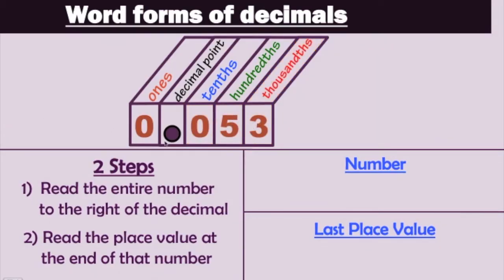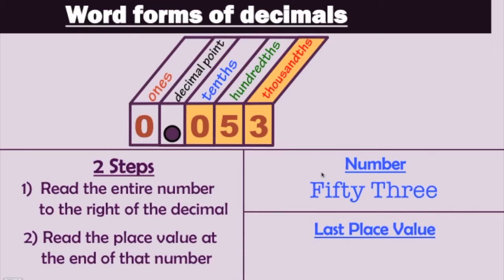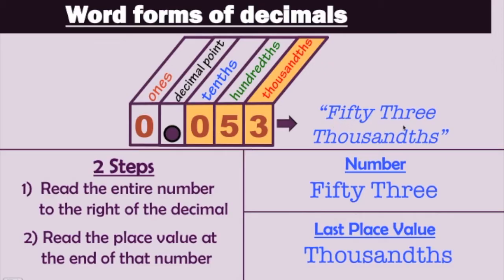How about 0.053? How would we properly read this decimal? Again, we'll just follow the two-step process. Step one: read the entire number to the right of the decimal. All together, these digits form the number 53. Step two: read the place value at the end of that number — that's the thousandths place. So to properly read this decimal, we put the two things together: that would be fifty-three thousandths, because the number here is 53 and the last place value is the thousandths place.